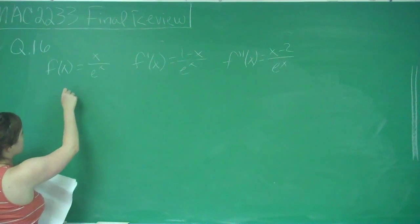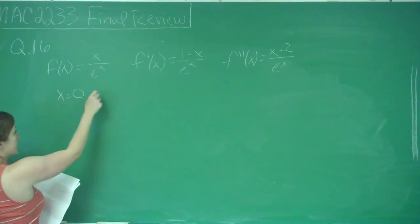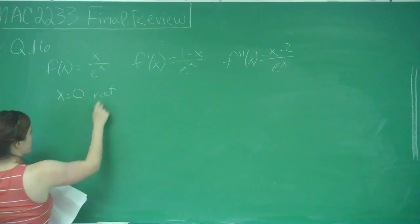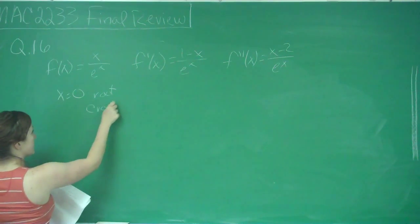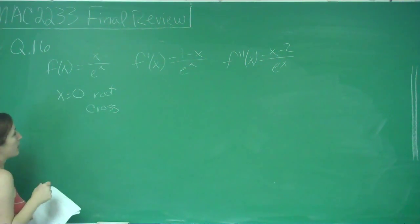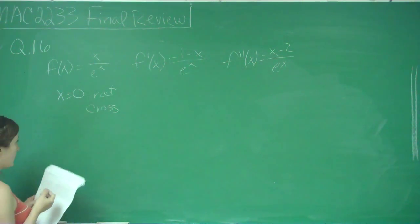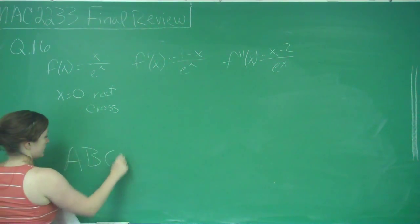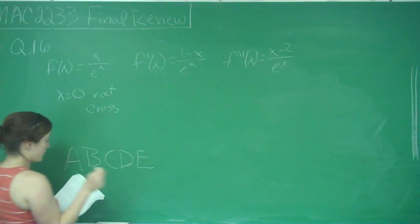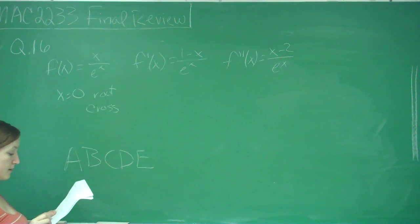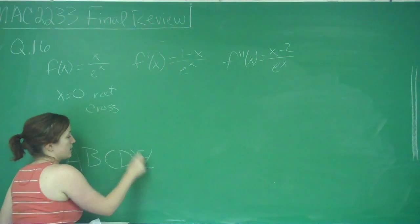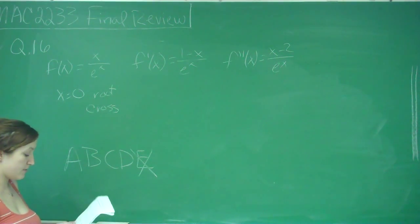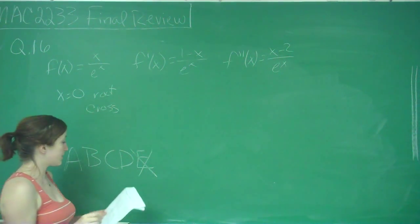Looking at f(x), we know that x = 0 is a root, and it will cross because the power of x is odd. We've got answer choices A, B, C, D, and E. Anything that doesn't cross at 0 is incorrect, so we can already cancel out letter E because E is just touching at 0.